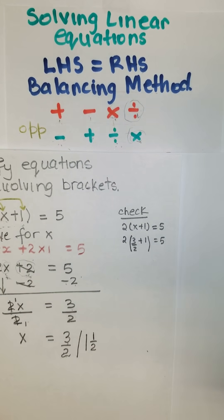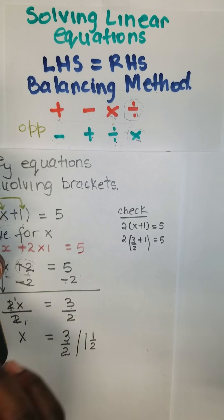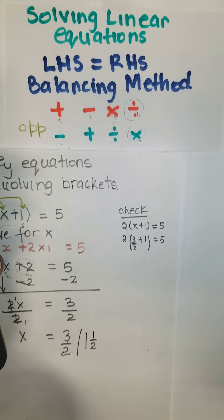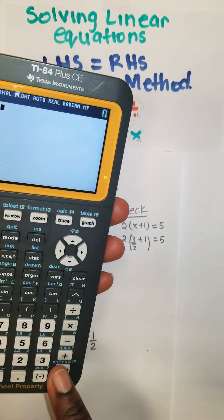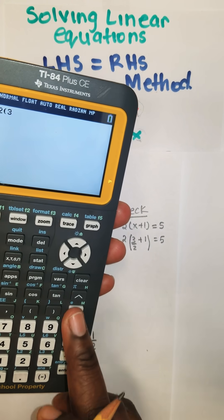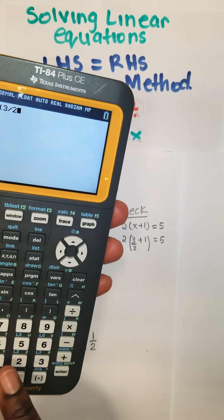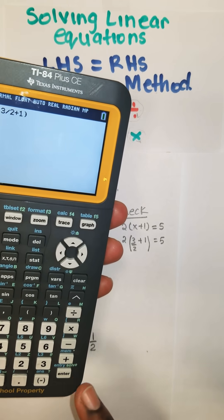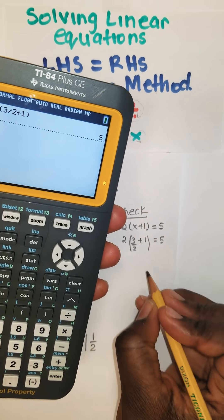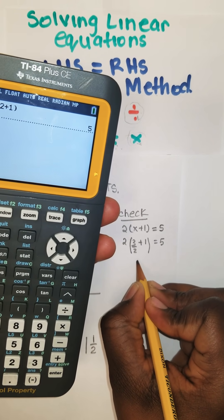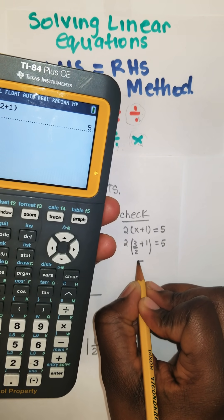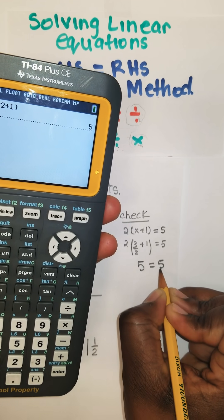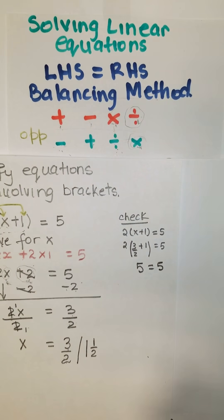If you want, you can use your calculator. So it's 2 open bracket 3 over 2 plus 1 close bracket is equal to 5. Five, so right here, 5 is equal to 5.